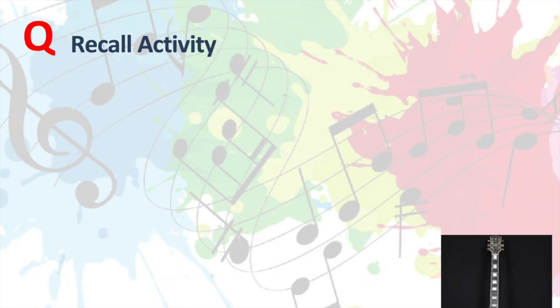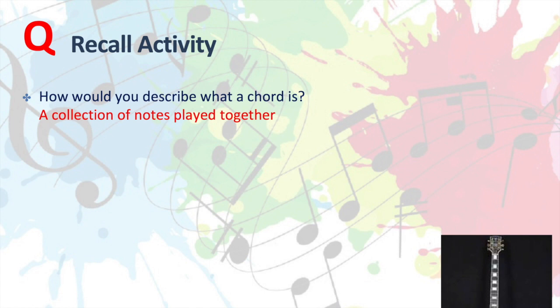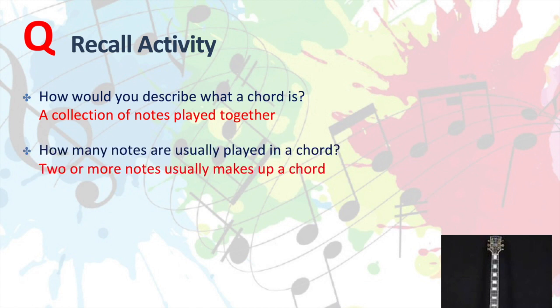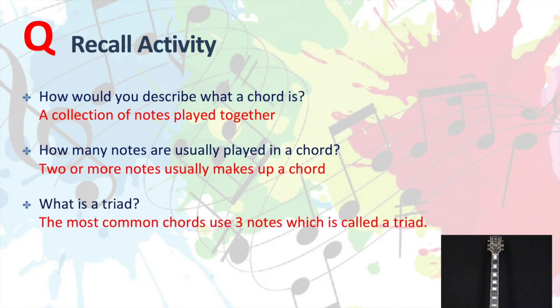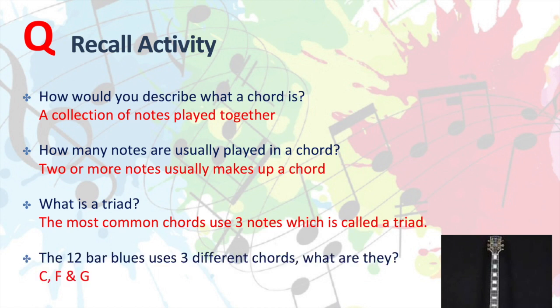Let's see if you were right. A collection of notes played together is what a chord is. Two or more notes usually makes up a chord. The most common chords use three notes, which are called triads. And the 12-bar blues uses three different chords: C, F and G. And hopefully you remember the order of our 12-bar blues, which is C, C, C, C, F, F, C, C, G, F and C.